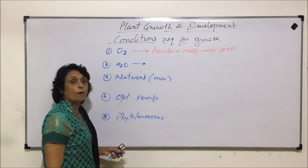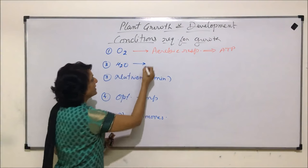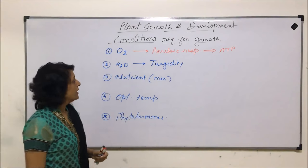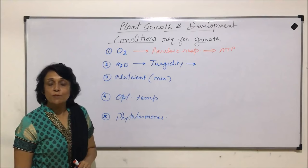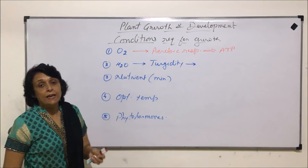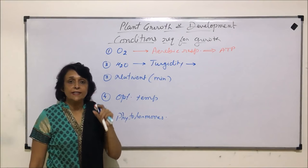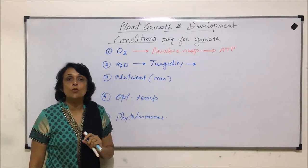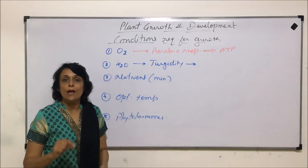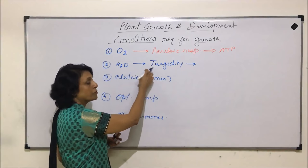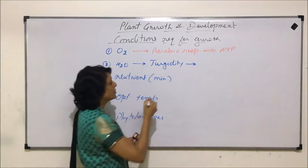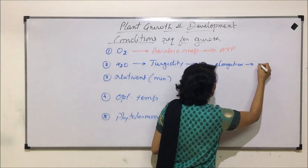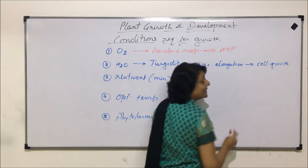Water which is required for growth is needed to provide turgidity. The cell will absorb water, will become turgid, and due to this turgidity the vacuole enlargement takes place, resulting in the growth of the cell. At the tip of the root there are meristematic cells; when they come into the next zone — the zone of elongation — elongation is basically due to enlargement of the vacuole, which takes place due to absorption of water. So first water gets absorbed, the cell becomes turgid, there is vacuolar elongation, and that helps in cell growth.